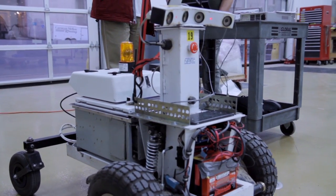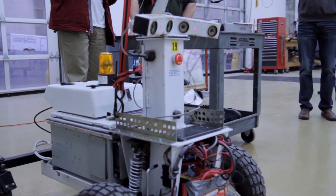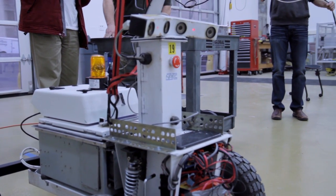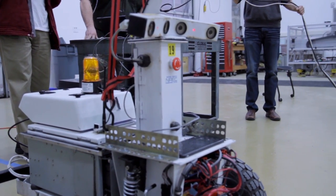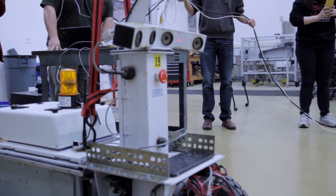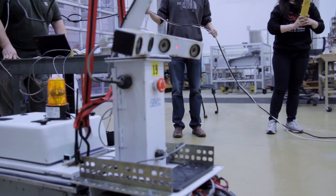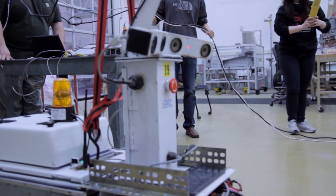The principle of gravity offload is that you want to have a robot that's driving on Earth but experiencing the gravity of some other planet, like Mars or the Moon. For us, it's the Moon that's interesting. The Moon is one-sixth surface gravity, so what we have is...